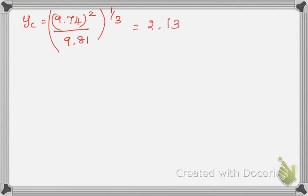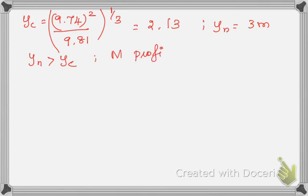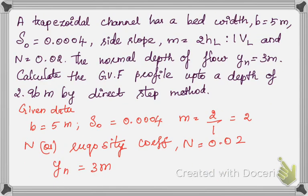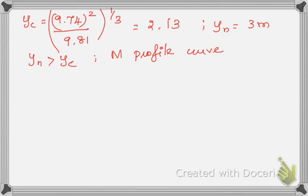Now we compare normal depth and critical depth. Y_N = 3 m and Y_C = 2.13 m, so normal depth is greater than critical depth — this means it is an M profile curve. Since the problem asks us to determine the GVF profile up to a depth of 2.96 m, which lies between Y_N and Y_C, the condition Y_N > Y > Y_C gives an M2 profile curve.